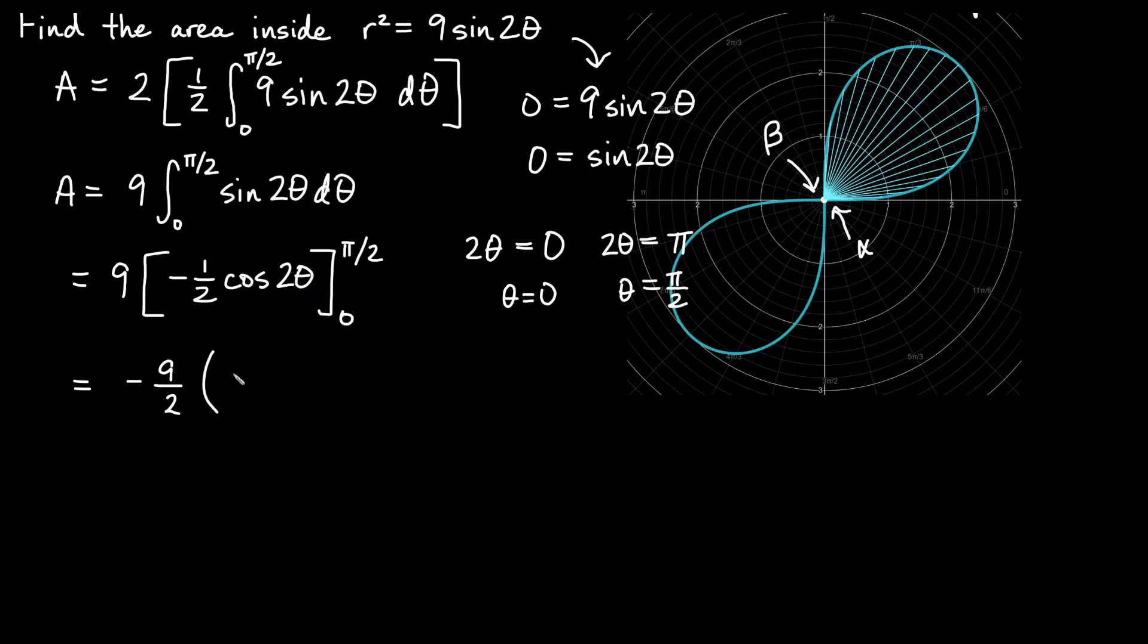And then when we plug in 0, I would get cos(0) which is 1. So I get positive 1 here.